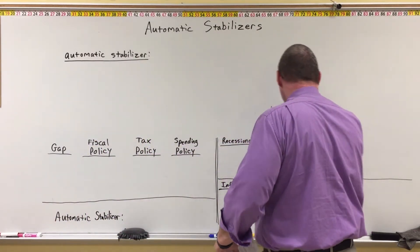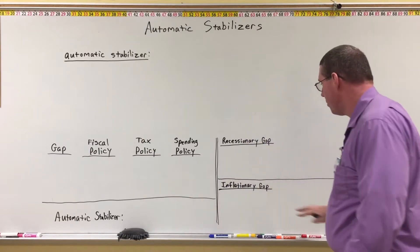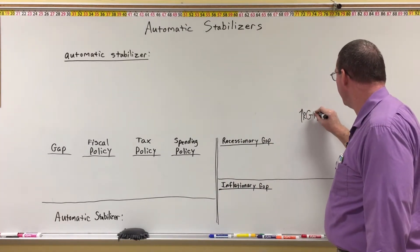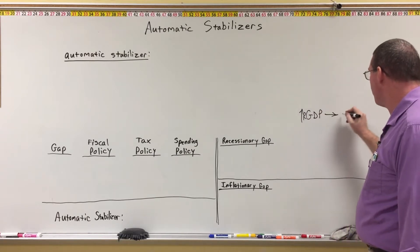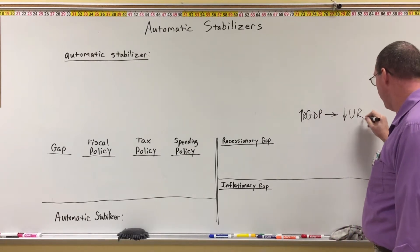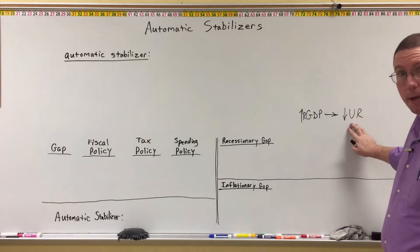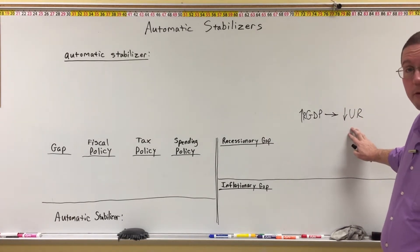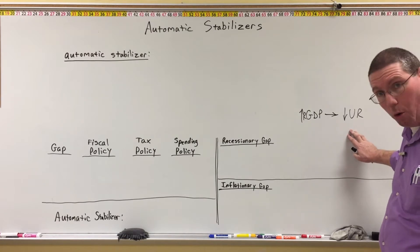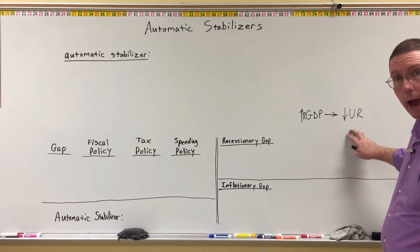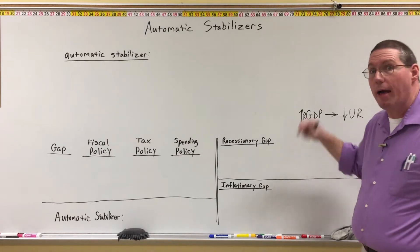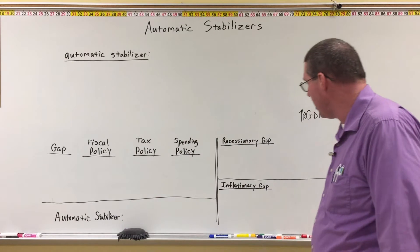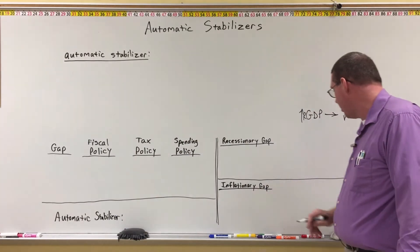On the other hand, in an inflationary gap, real GDP is high. There are more people working than should be working — we're overusing our labor resources. Real GDP is high, that's good, but it's too high. We are overproducing in the economy; we are in an inflationary gap.